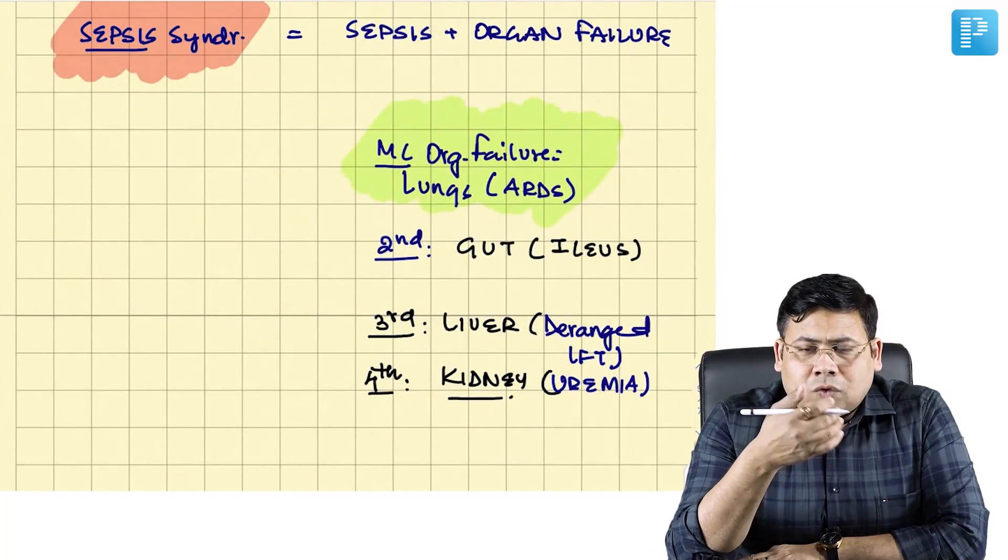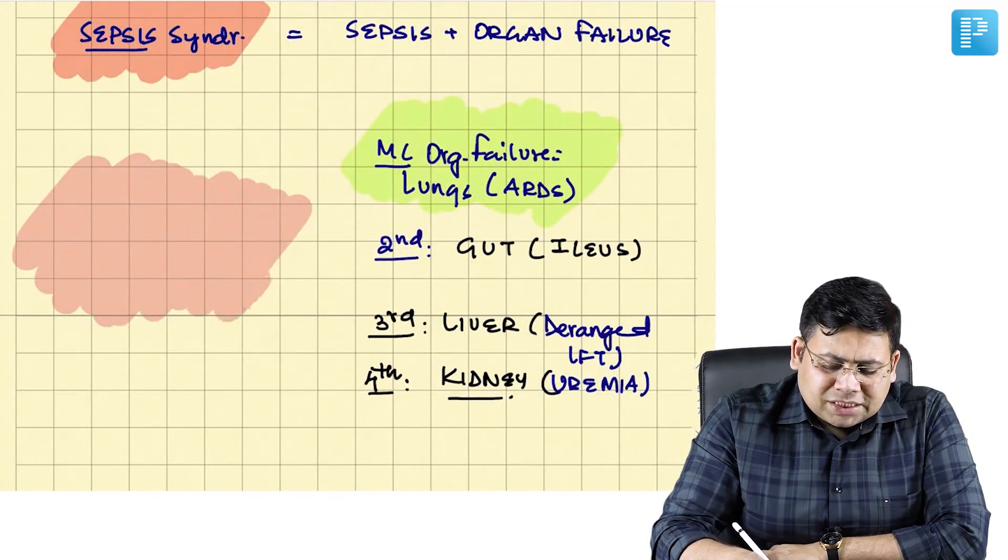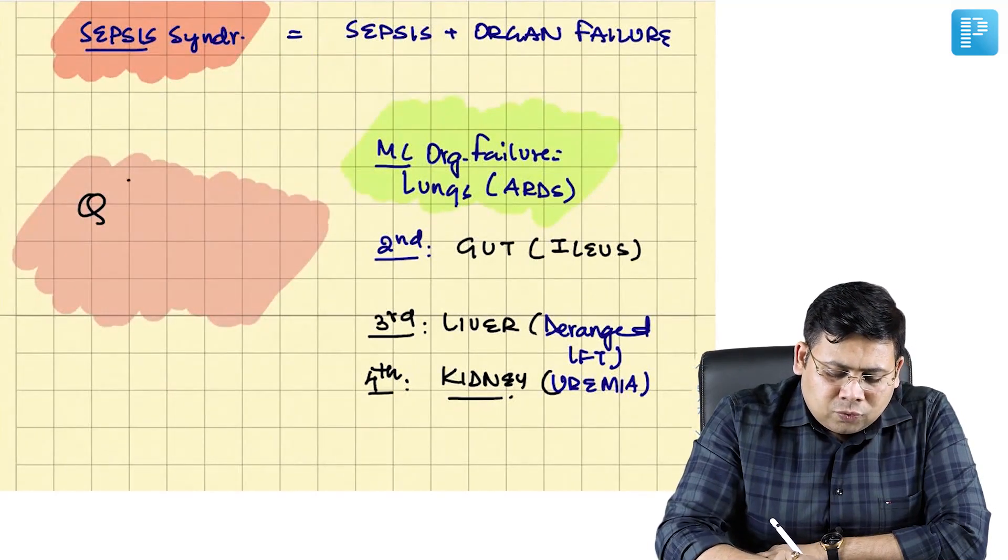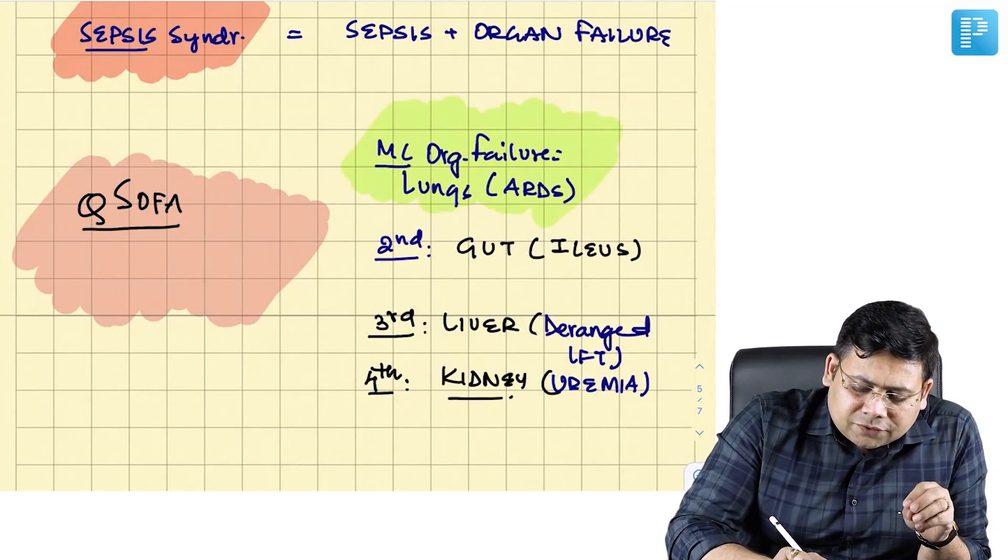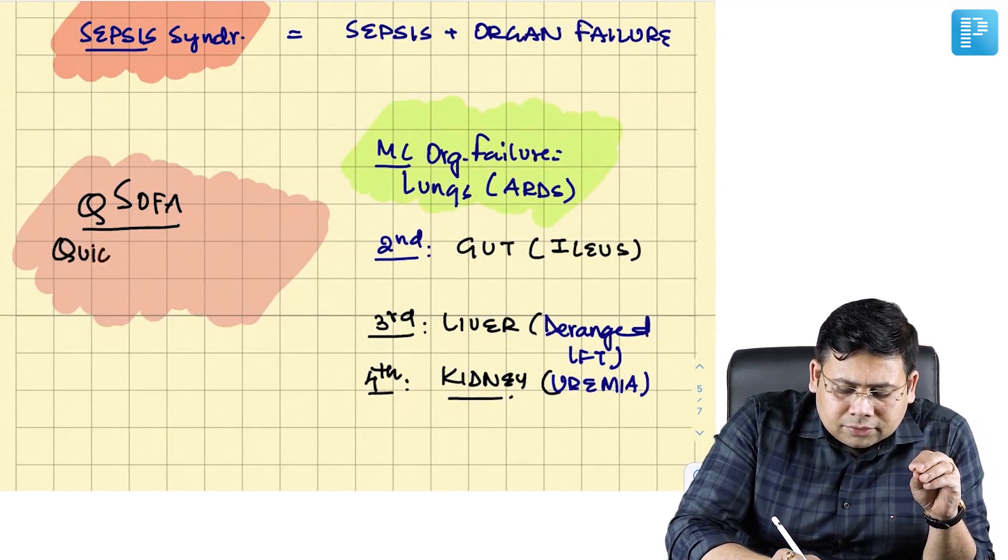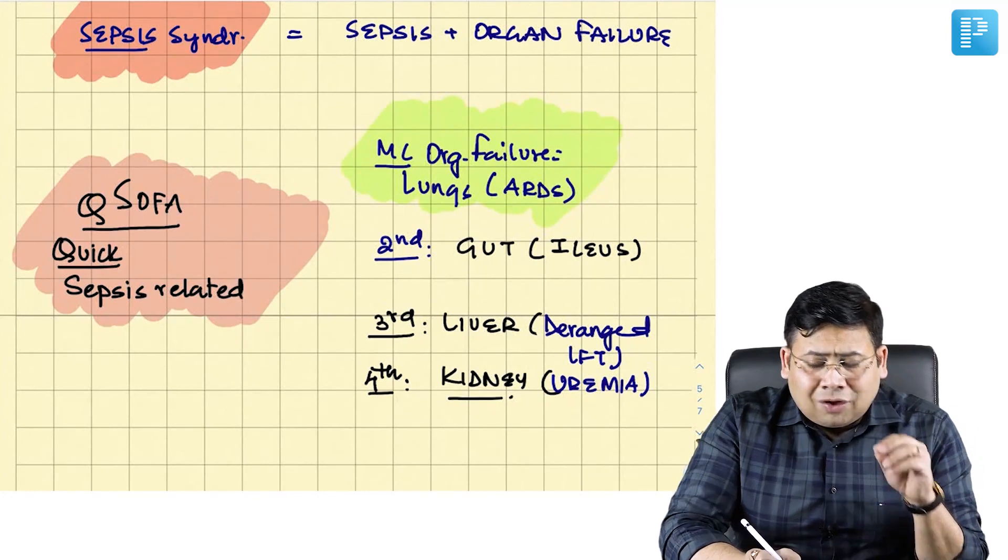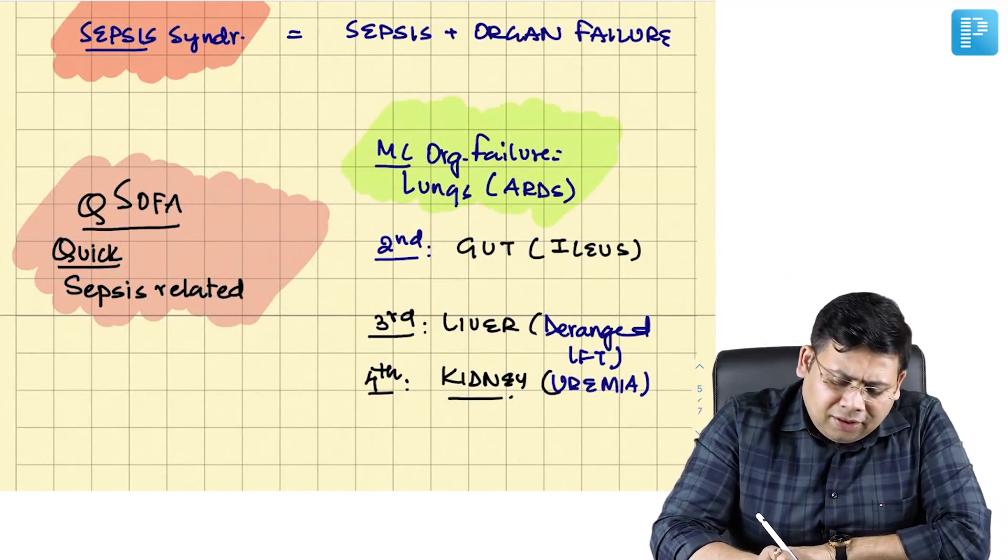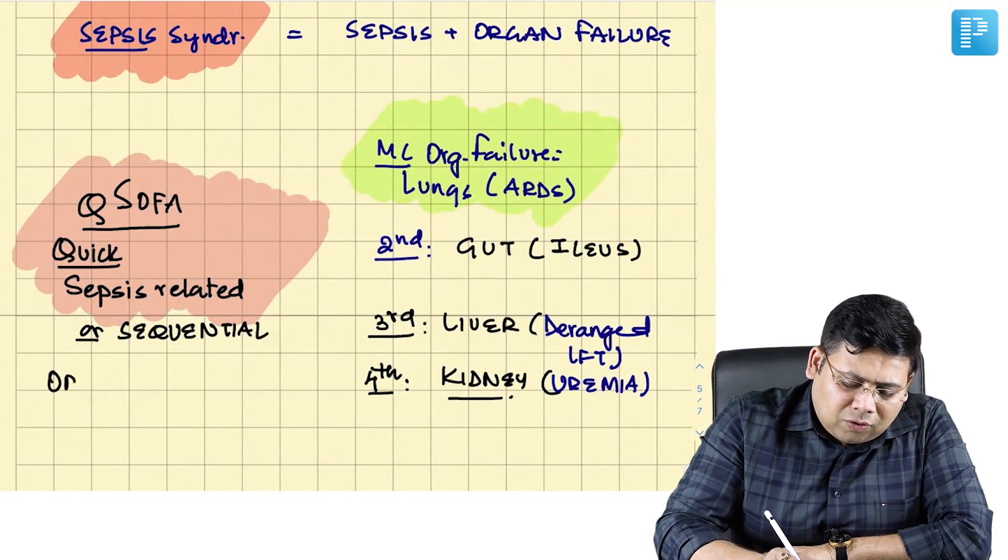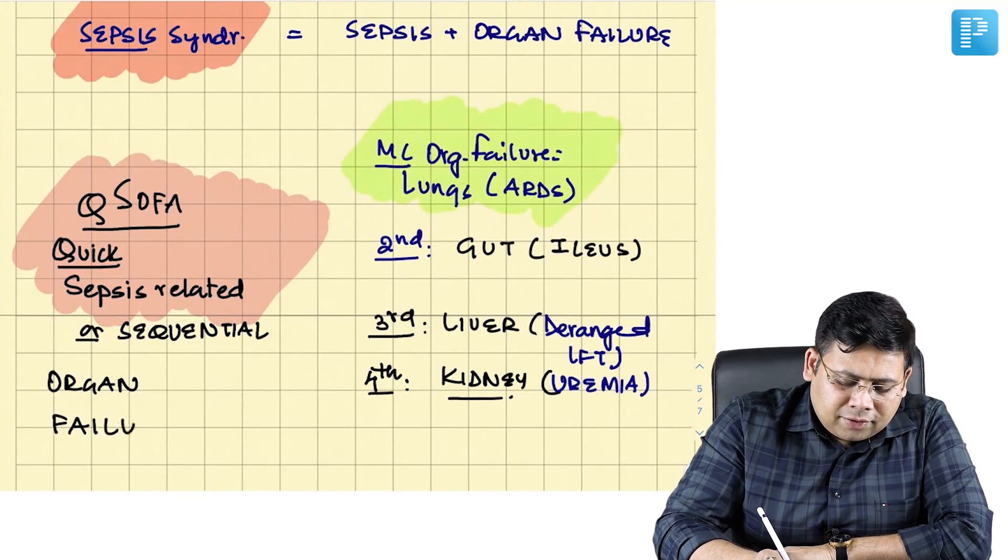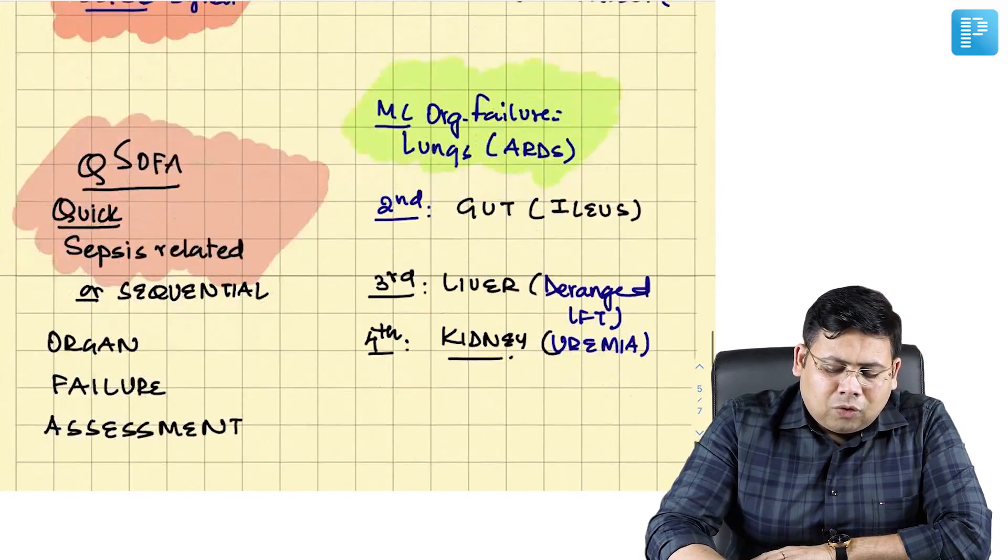Now what is the marker or how do you gauge the prognosis of a patient with organ failure? There is a score which is known as QSOFA, and this is a very important question also. QSOFA stands for Quick Sepsis Related or Sequential Organ Failure Assessment. Quick sepsis related organ failure assessment.